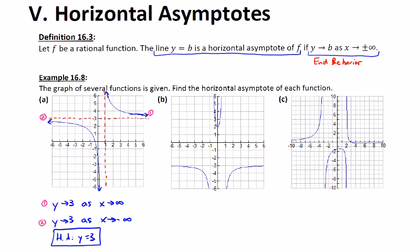Part B. This graph has one, two, three, four, five, six arrows. And the only two arrows that I'm interested in are the ones that are going off to the right and to the left. And it definitely looks like they are reaching a boundary. And it looks like the boundary works on both sides of the graph. And it appears that it would be at negative three. So the horizontal asymptote for part B is going to be y equals negative three.